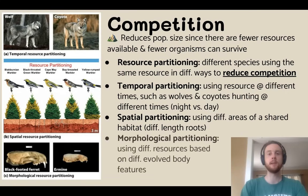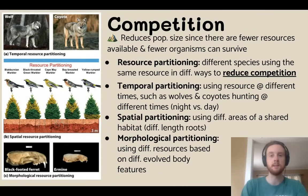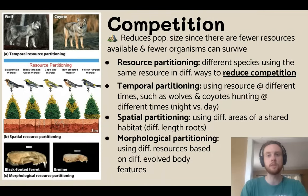And then finally we have morphological partitioning, where species that hunt for the same resource evolve slightly different body features to utilize different portions of that resource. Here we have a ferret and an ermine — they've evolved slightly different jaw sizes and tooth patterns, which enables them to hunt for different size prey so they don't compete directly. The big takeaway from resource partitioning is that it reduces competition, enabling species to thrive and grow to larger population sizes.